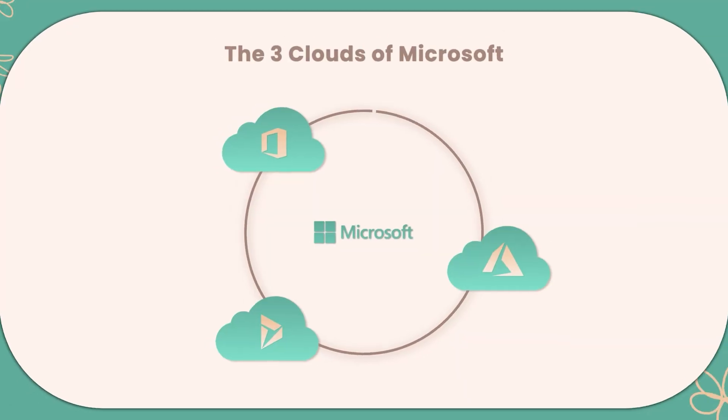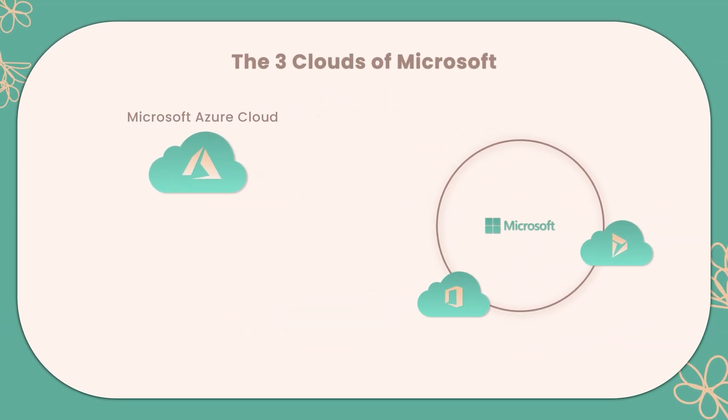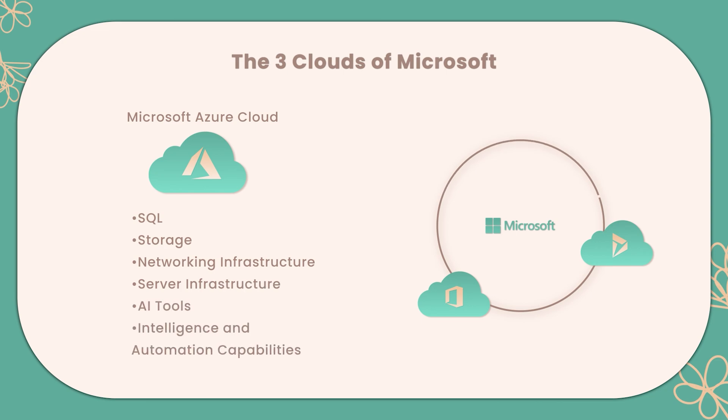Then we have the Microsoft Azure cloud, which is the infrastructure and platform service cloud environment — a comprehensive platform of cloud computing capabilities. Think of SQL, storage, your network infrastructure, server infrastructure, AI tools, and intelligence and automation capabilities for platform services. If you think of the traditional lift-and-shift into the cloud where you took on-prem infrastructure from the data center and migrated it, the cloud they were migrated to is most likely Microsoft Azure. In a large company, you might have an Entra ID setup with your identity configuration and services and server components living inside that Azure cloud environment.